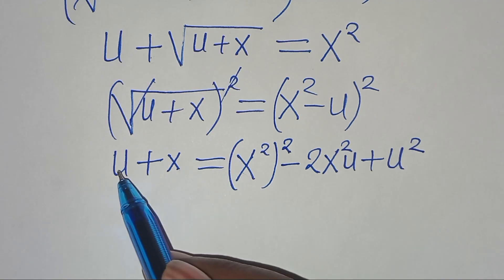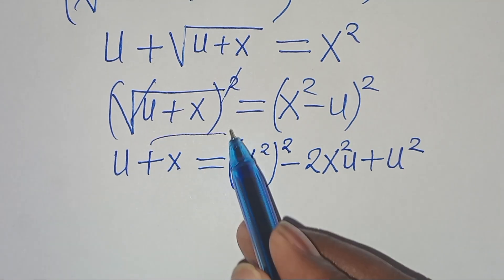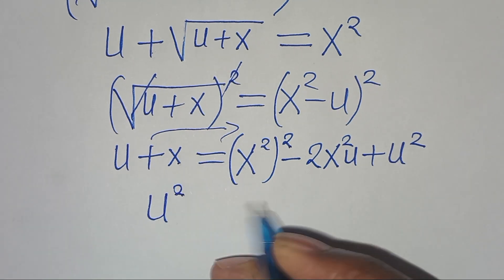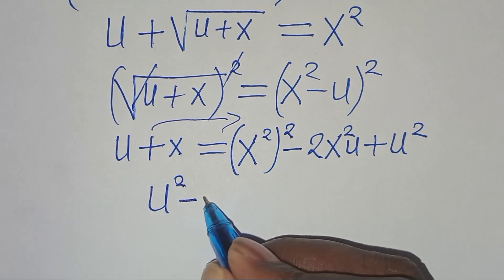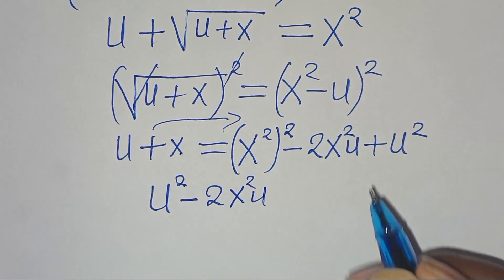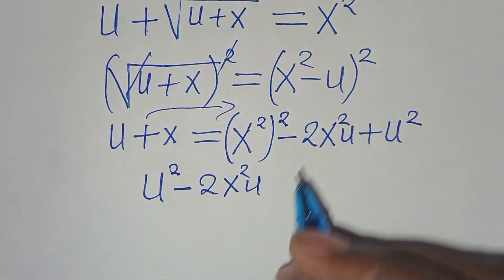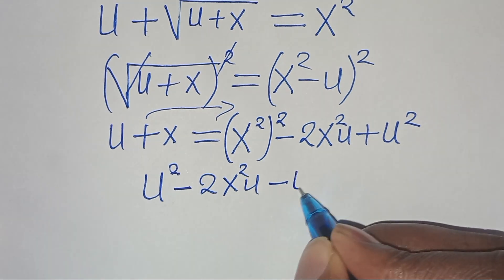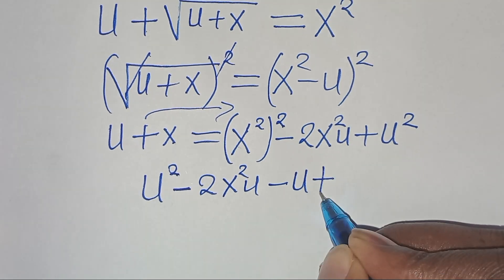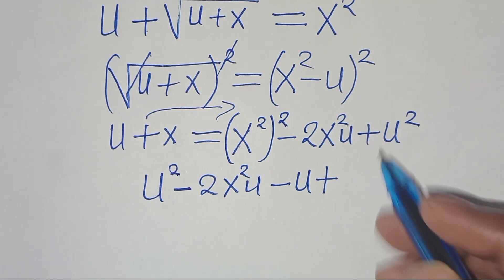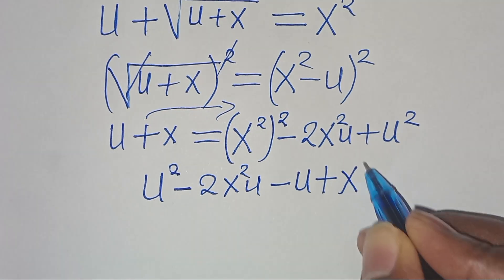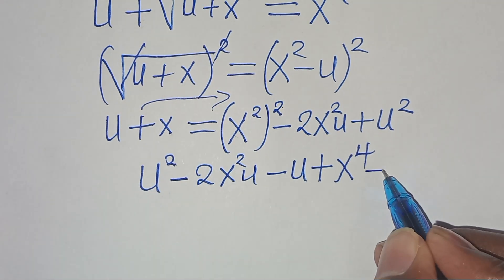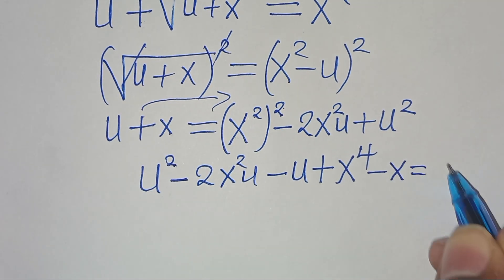Now let's take u plus x to the right hand side, so that we have u squared minus 2x squared·u minus u plus x to the power of 4 minus x, equal to 0.